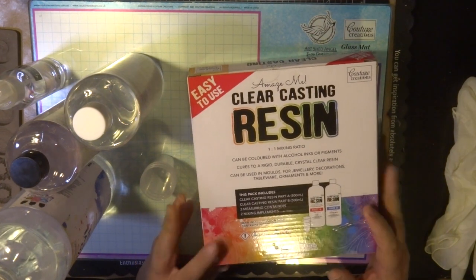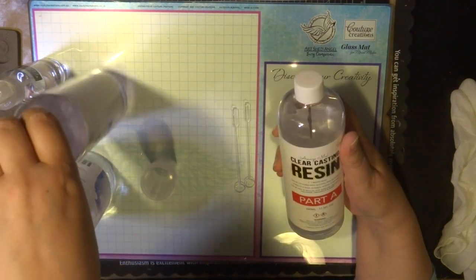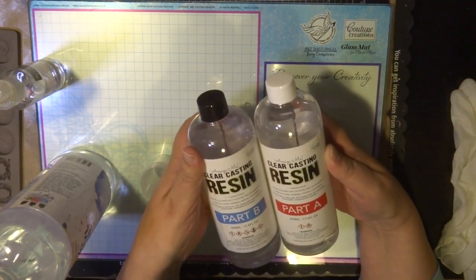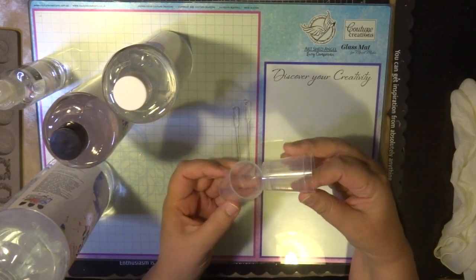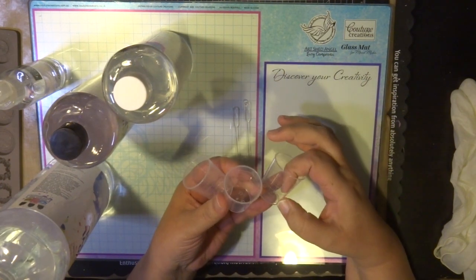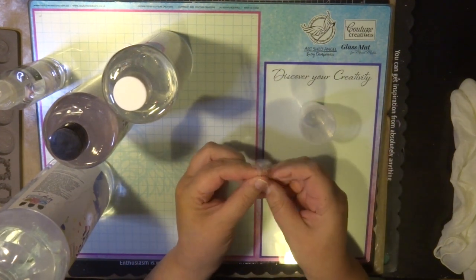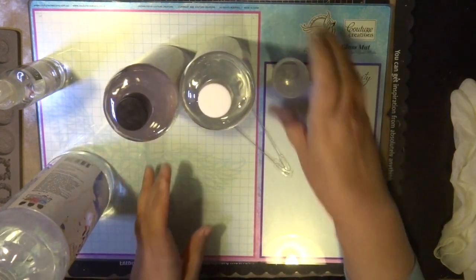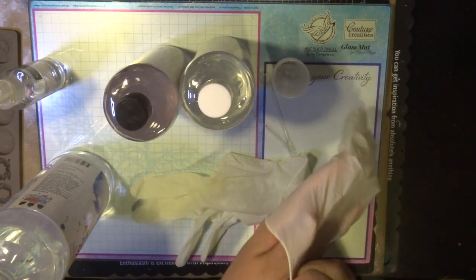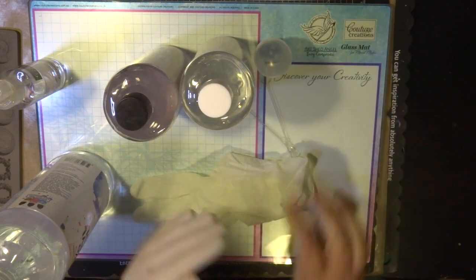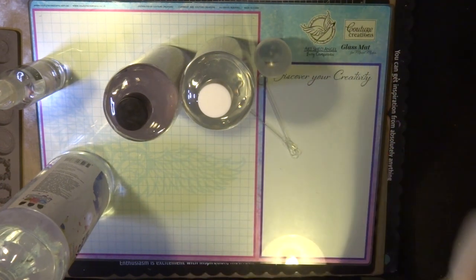So I'm just going to show you exactly what you get inside the box. In the box you get part A and part B, clearly marked. You need to have equal amounts of this mixture to work. You get three little containers with markings on the side, but you also can buy extra containers separately. You also get two implements to stir. What I recommend that you have on hand is some gloves. Working with this product you need to be careful to have a well ventilated room and you need to have some rubber gloves to work with this product.